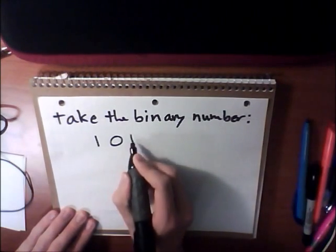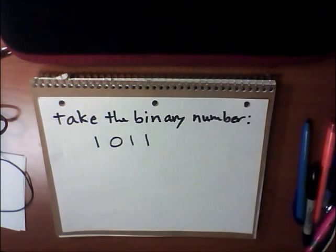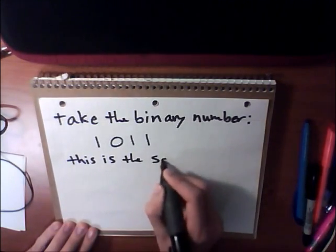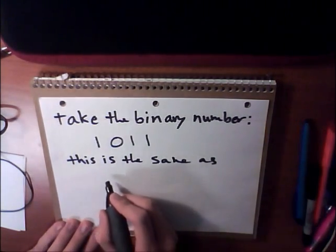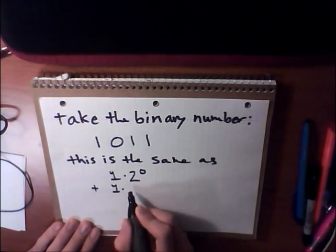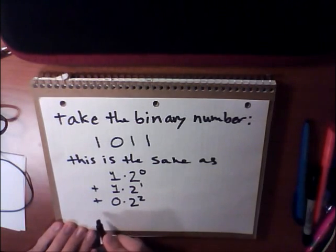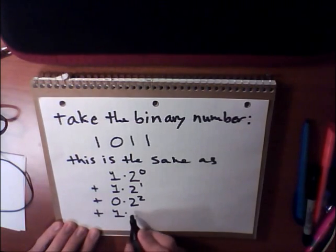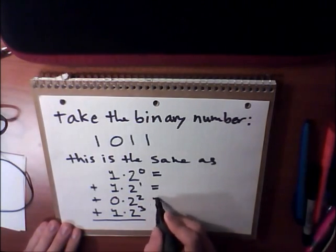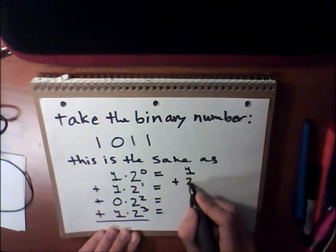Take the binary number 1011. This is the same as 1 times 2 to the 0, plus 1 times 2 to the 1st, plus 0 times 2 to the 2nd, plus 1 times 2 to the 3rd. We can elaborate this a bit further to show that it is 1 plus 2 plus 0 plus 8, and when we add it all up, we get 11.